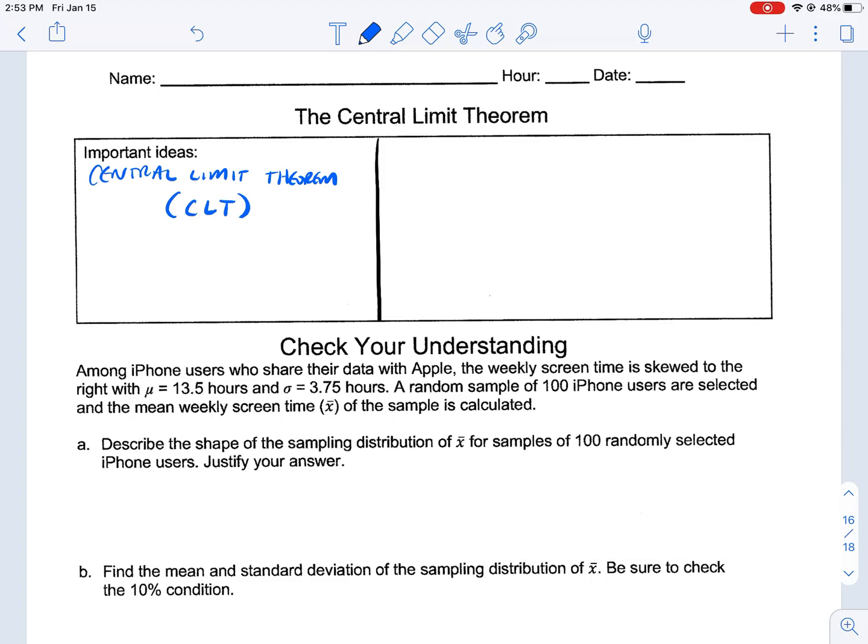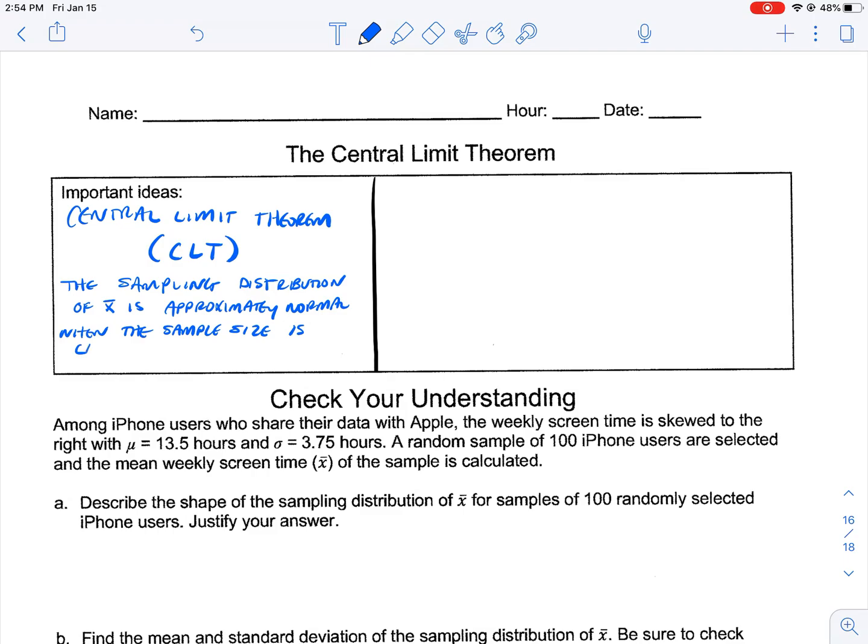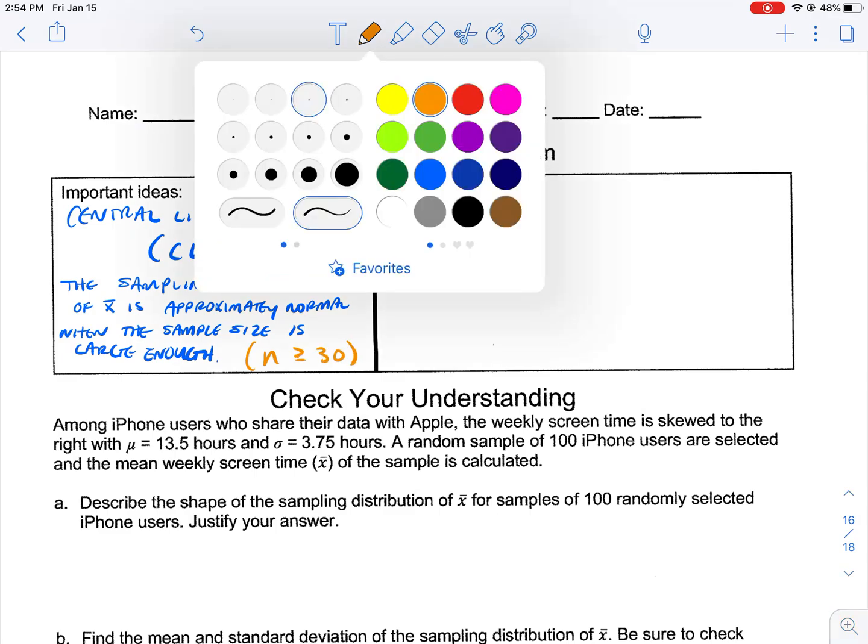Now, the CLT says this: the sampling distribution of x-bar is approximately normal when the sample size is large enough. And our magic number here is going to be n is greater than or equal to 30. We're looking for a sample size of 30 or larger.